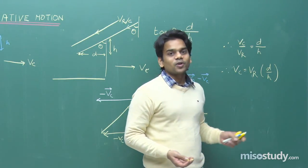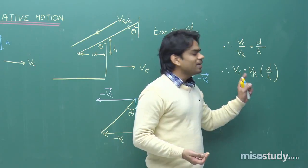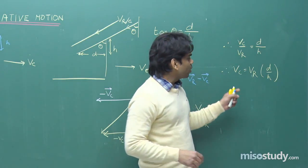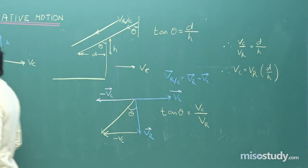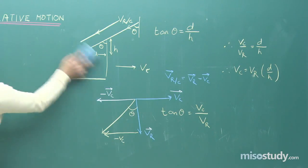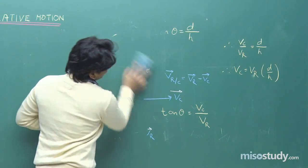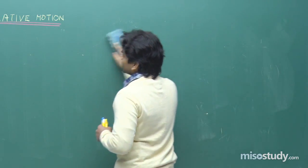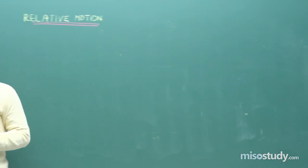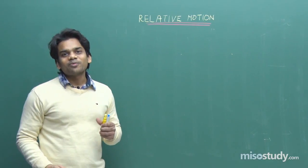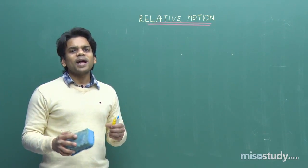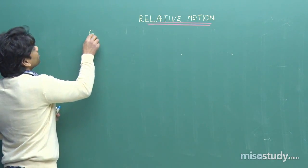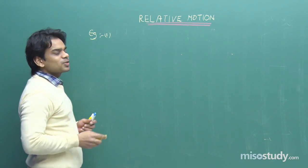He can even increase his speed beyond this value and still escape. The minimum speed required is given by V_C = V_R × D/H. We have now completed two parts: the river-boat problem and the rain-man problem. Let's practice some problems based on both of these cases.